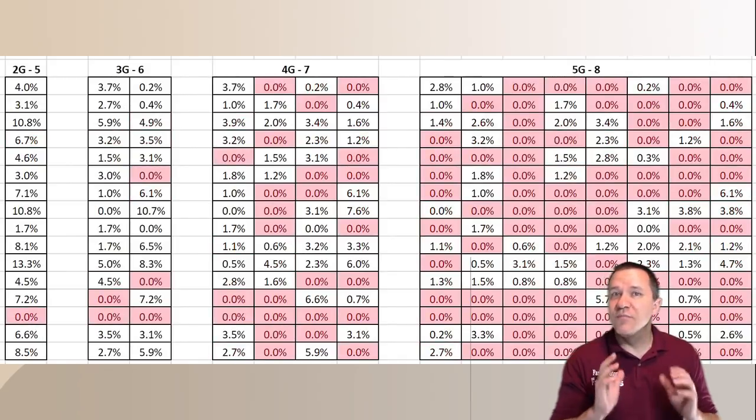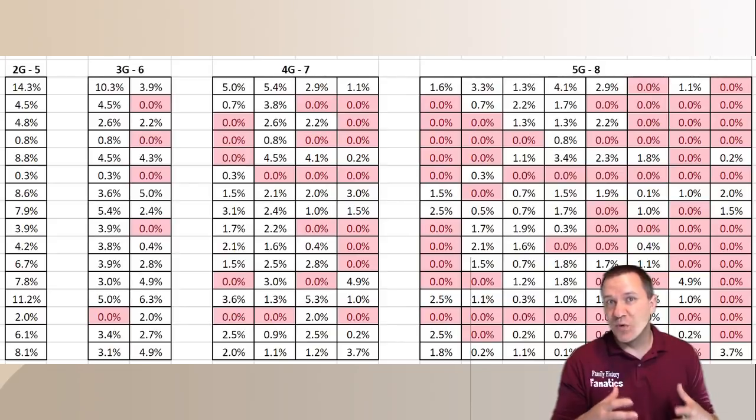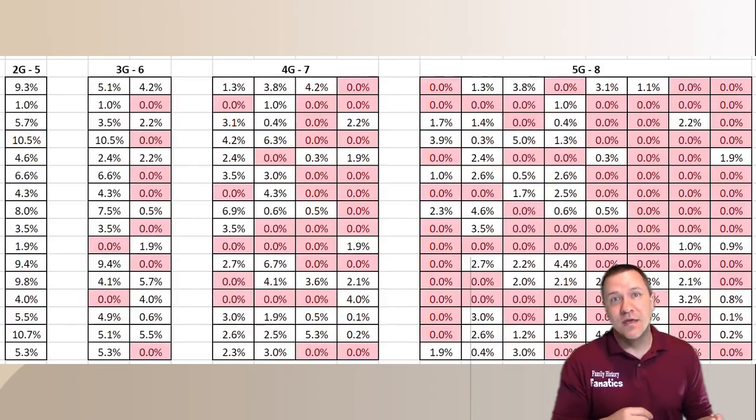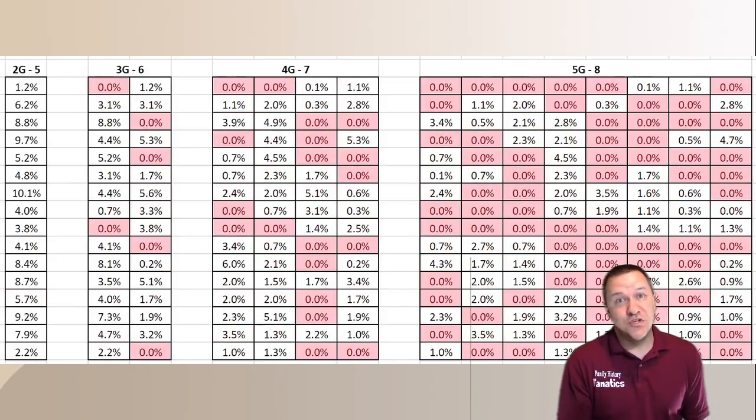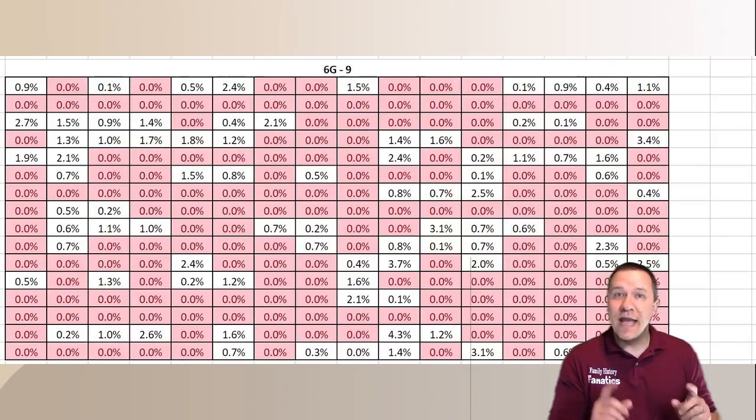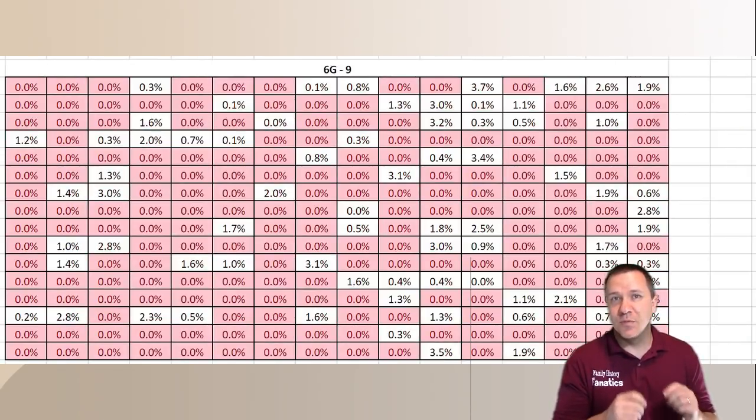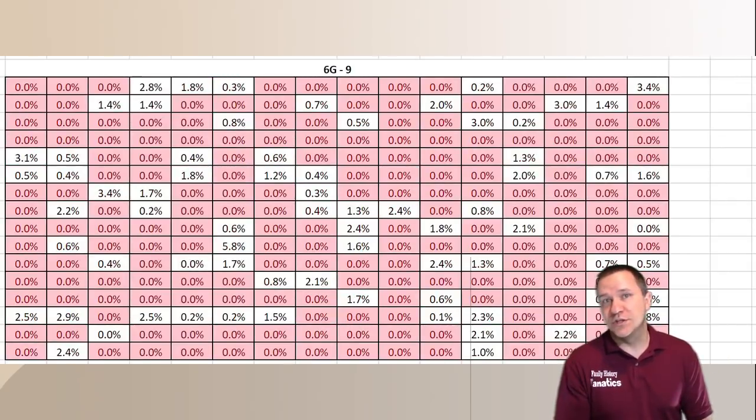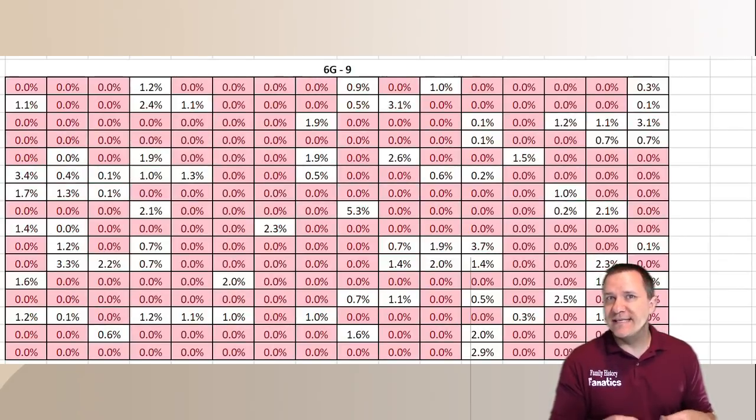On my computer model I've marked that in red so you can see in the seventh generation it's just a little more than half of all the grandparents that you share DNA with and by the eighth generation it's actually less than half of all the grandparents that you share any DNA with. Now as I extend this out to the ninth generation we also see a couple of interesting things.